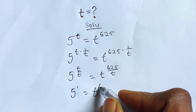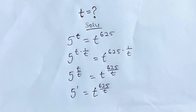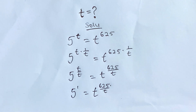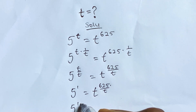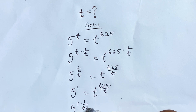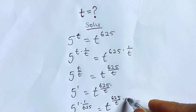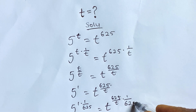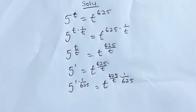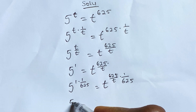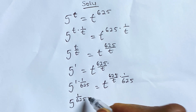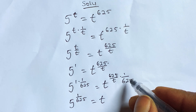Now we multiply both sides by the inverse of 6 over 5. So we have 5 to the power of 1 multiplied by 1 over 6/5, which equals t to the 6/5 divided by t, multiplied by 1 over 6/5. Solving this gives us 5 to the power of 1 over 6/5 is equal to t, and we are left with 1 over t on the right side.